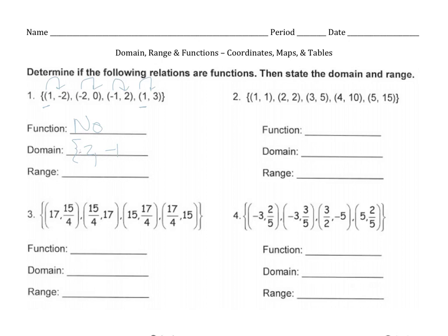We list the domain from least to greatest with no repeats: the smallest input is negative two, then negative one, then one — we don't list one twice. The range is all possible outputs, or y-values. Going from least to greatest: negative two is the smallest, then zero, two, and three. So that is the domain and range for this set of ordered pairs, which in this case is not a function.